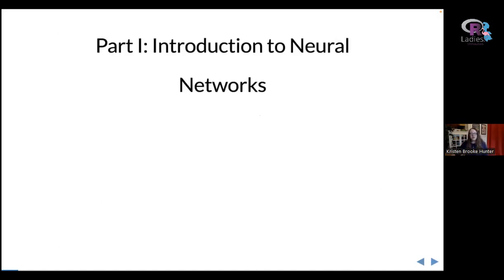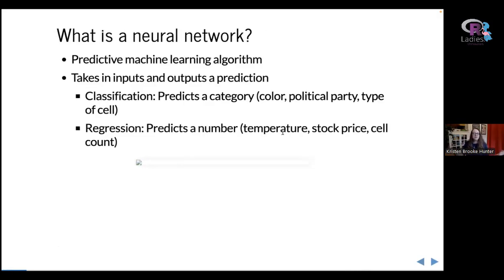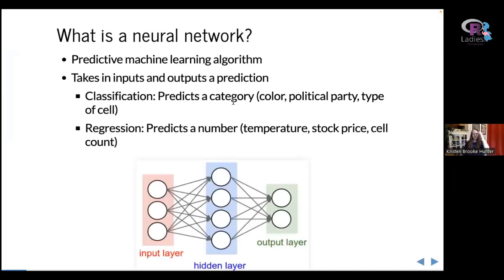So let's talk about what neural networks are. A neural network is a predictive machine learning algorithm. It takes in inputs — depending on your field, these might be called features, predictors, covariates, or variables — and outputs a prediction. Neural networks work for both classification and regression. Classification is when we want to predict a category, like the color of a pixel or a person's political party. Regression is when we want to predict a number, like temperature or a stock price.